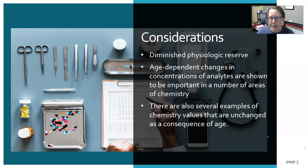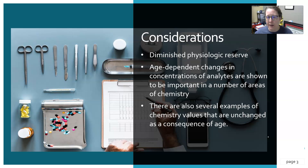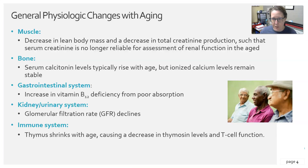Some considerations for our elderly patients: they have a diminished physiological reserve, making it harder to bounce back or recover from illnesses. They have age-dependent changes in concentration of analytes, which are important in a number of areas of chemistry. There are also several examples of chemistry values that are unchanged as a consequence of age.